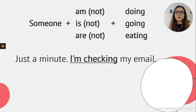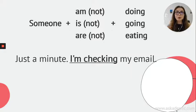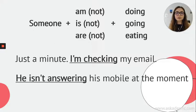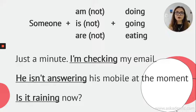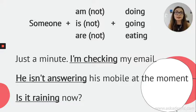Let's look at the example: Just a minute, I'm checking my email. We use present continuous for things that are temporarily happening, that are happening at the moment, right now. He isn't answering his mobile phone at the moment — it's not something general; it's something happening right now. For a question, we say: Is it raining now? We just change the order of the sentence. Answers: Yes, it's raining. No, it's not raining. Yes, it is. No, it's not.